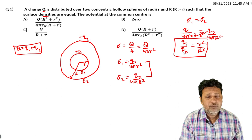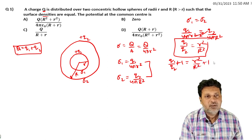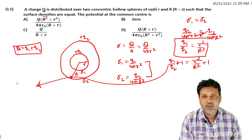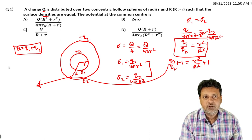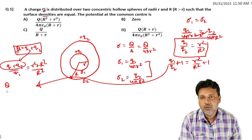Adding 1 to both sides: q1/q2 + 1 = r²/R² + 1. Taking LCM on both sides: (q1 + q2)/q2 = (r² + R²)/R². Since q1 + q2 = Q (total charge), we get Q/q2 = (r² + R²)/R².